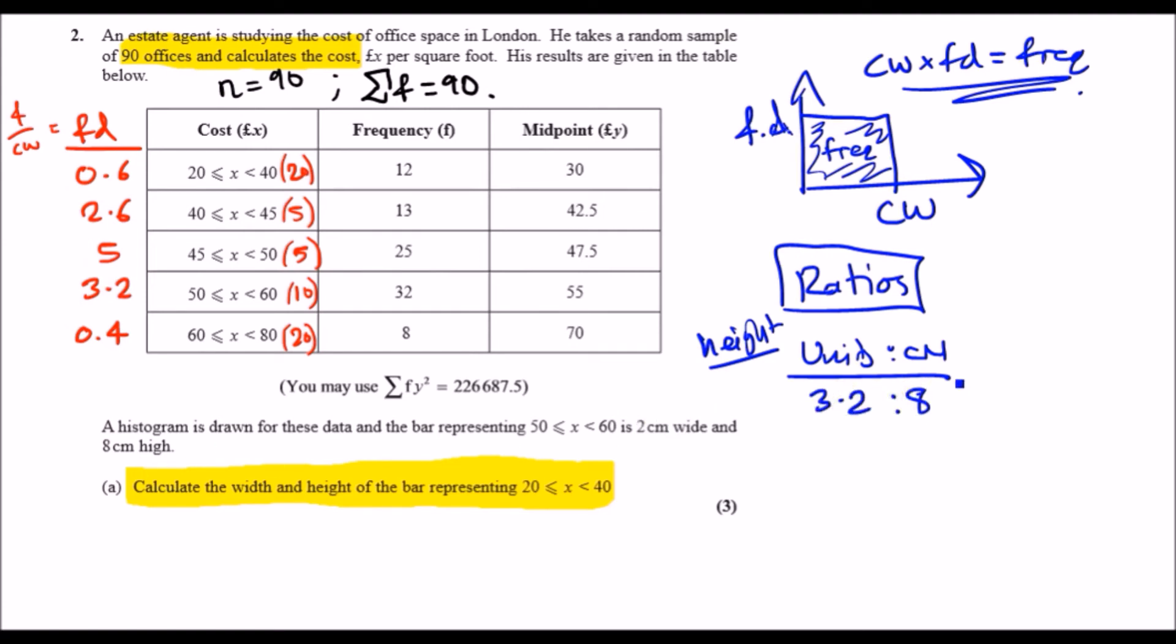So first things first, just find what 1 unit is. Divided by 3.2, it would just be 8 over 3.2, which is 2.5. So every 1 unit is 2.5 centimeters of height. Meaning, if we're going to calculate now the 20 to 40 region, which is 0.6, so that means 0.6 units times by 2.5, and you should get 1.5. Done. So 1.5 centimeters represents the height.